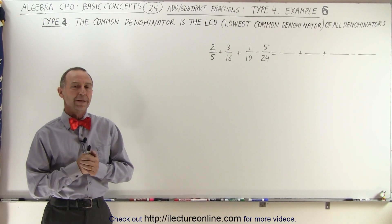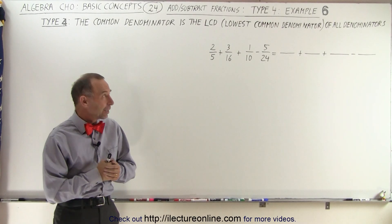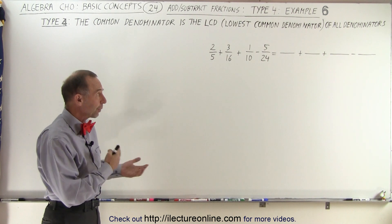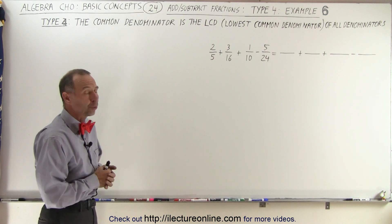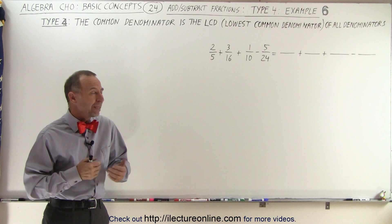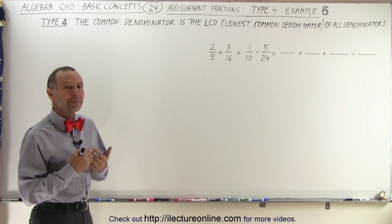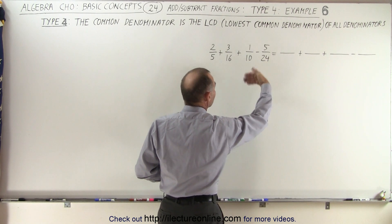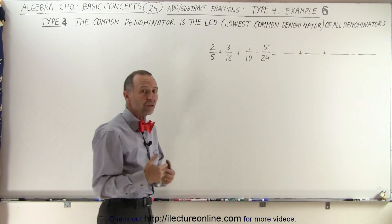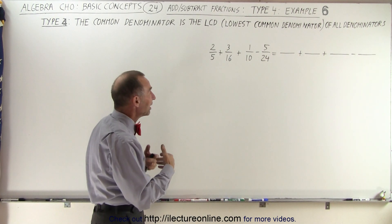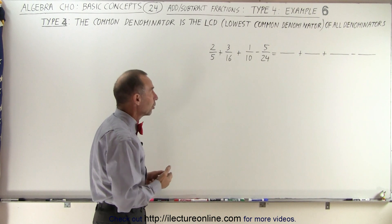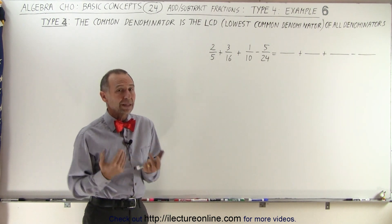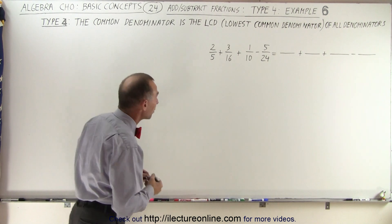Welcome to our lecture online. Here we have an example with four fractions and the denominators are relatively large, especially 16 and 24. Method one — taking the largest denominator and finding multiples to see if the smaller denominators fit evenly — is not very appealing here. I think we're better off using method two only.